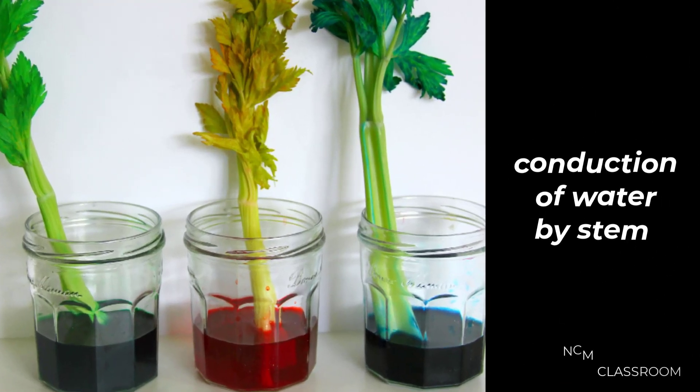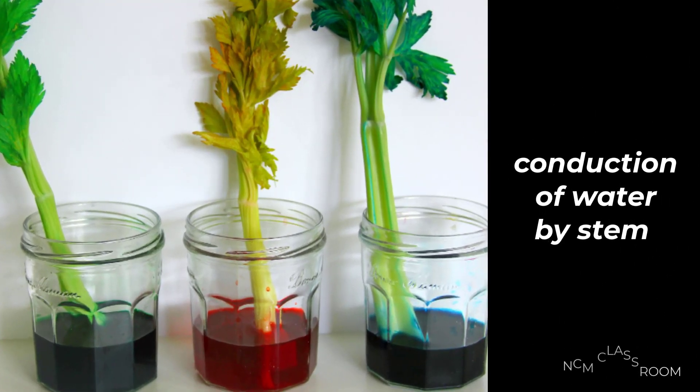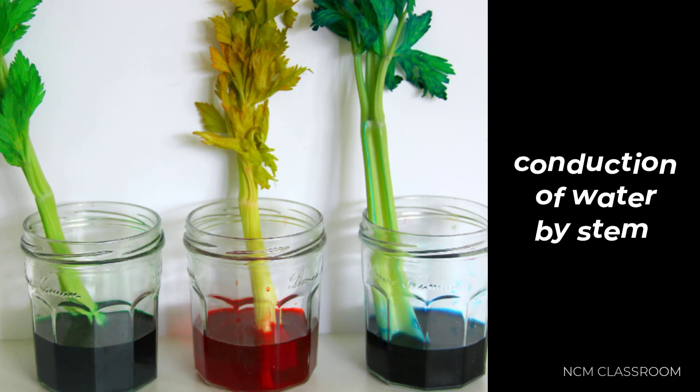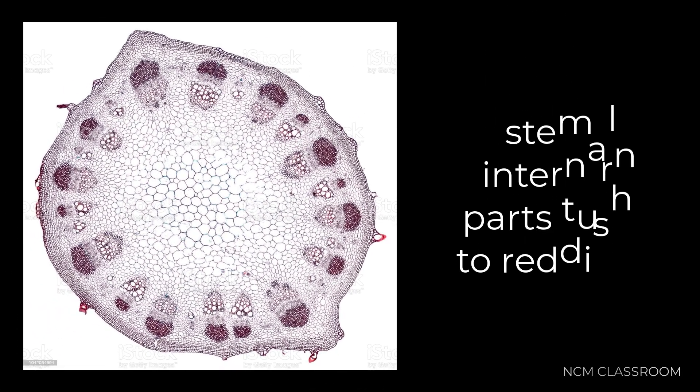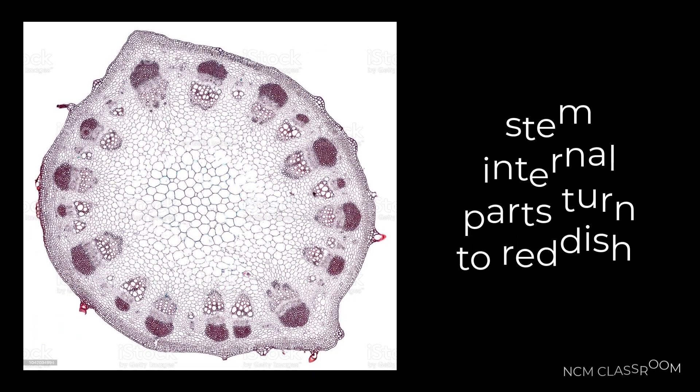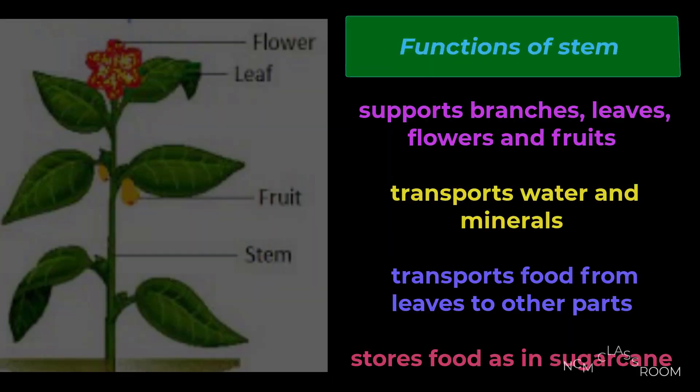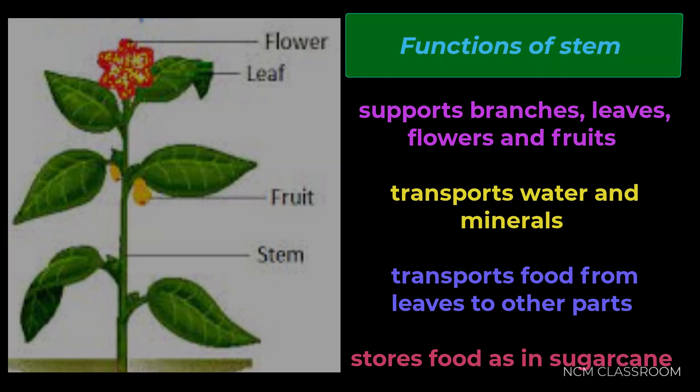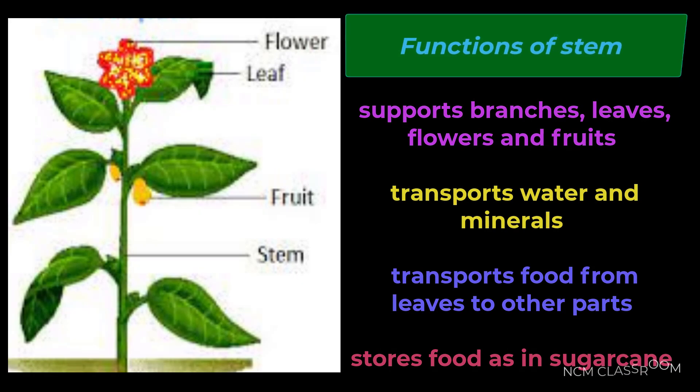And here we will see conduction of water. Now take any twig of a plant and keep inside the bottle and add some color to the water. Now cut it with the help of a sharp blade and observe under the microscope. You can see the internal parts are red in color.